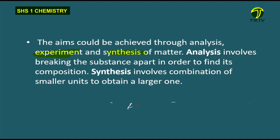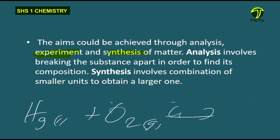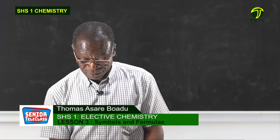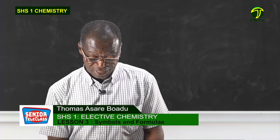Lavoisier also combined the two smaller units to obtain a larger one — he heated mercury and oxygen for a long time and obtained the solid mercury(II) oxide. This is an example of synthesis. From the two experiments, we see that both analysis and synthesis are done through experiment.